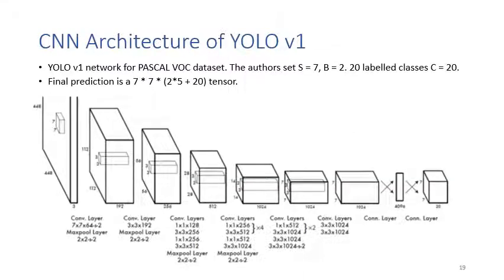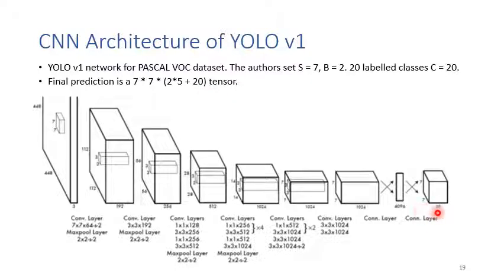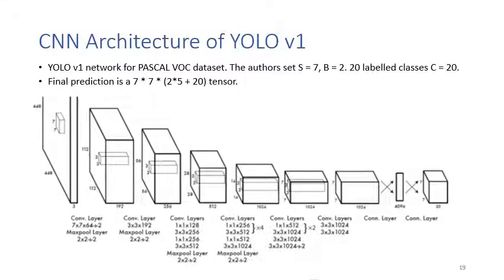This is the neural network architecture of YOLO. The authors set the grid size to 7, the number of bounding boxes per grid B=2, and classify 20 classes. So the final prediction tensor size is 7×7×(2×5 + 20) = 7×7×30. The input size is 448×448. There are several convolution layers, including 1×1 convolution filters for depth-wise separable filtering.